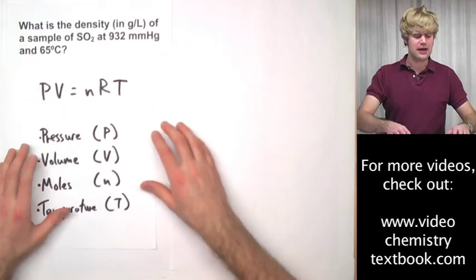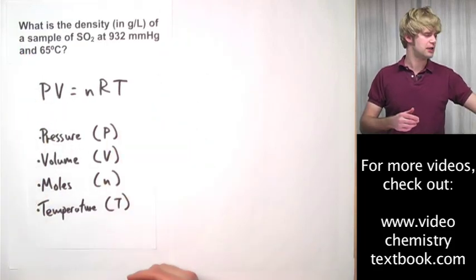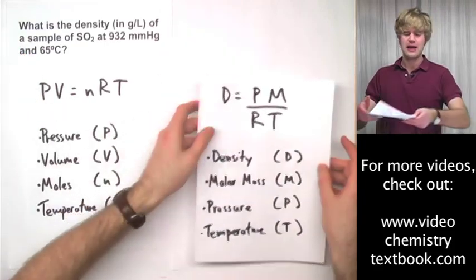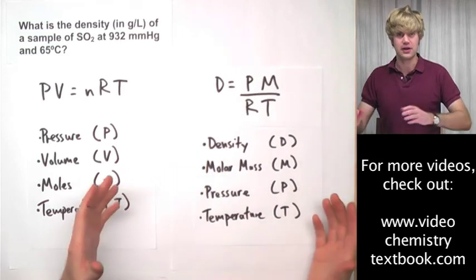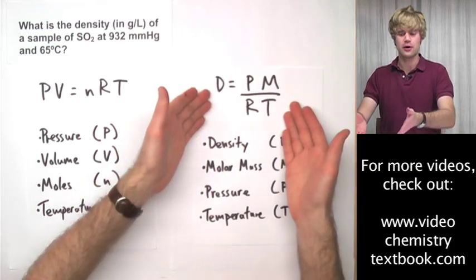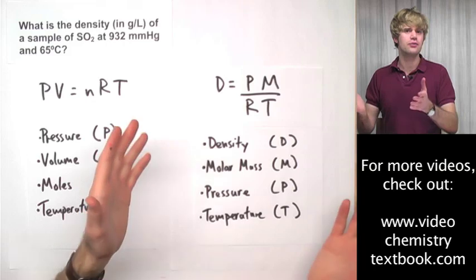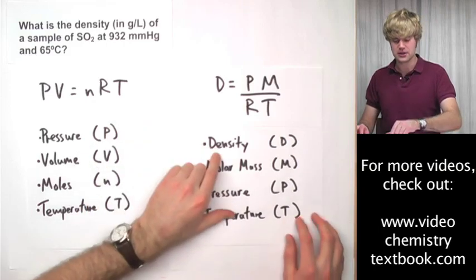It turns out that I can take PV equals nRT and transform it into another version of the ideal gas law, which I've written here. This lets us solve for slightly different variables, particularly it lets us solve for density.